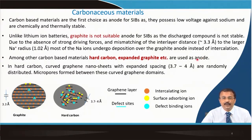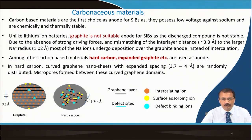Among carbon materials, hard carbon and expanded graphite are useful and used as anodes. In hard carbon, there is a curved graphene nanosheet where each single sheet is a graphene sheet. This curved structure has a higher interlayer spacing of 3.7 to 4 Å — larger than graphite — and they are randomly distributed. Micropores form between these curved graphene domains.